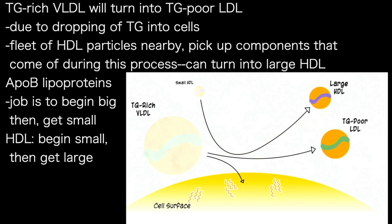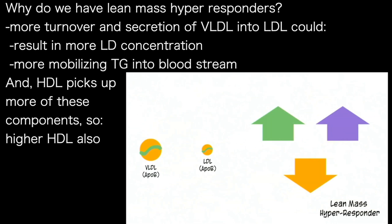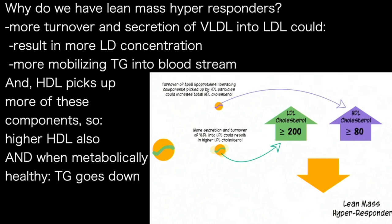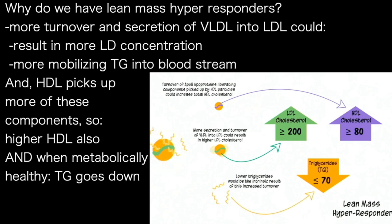This helps explain lean mass hyper-responders because more secretion and turnover of VLDL into LDL could result in higher LDL concentration — you're mobilizing more triglycerides into the bloodstream. But because of this turnover of ApoB lipoproteins, it's liberating more components to be picked up by HDL, which could explain the higher HDL cholesterol. And when you're metabolically healthy, the increased turnover results in lower triglycerides — explaining why this triad seems to be so ubiquitous across all these different populations, ages, and ethnicities.